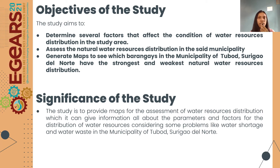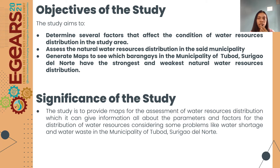Second is to assess the natural water sources distribution, and lastly is to generate maps to see which barangay in the municipality of Tubud, Surigao del Norte has the strongest and weakest natural resources distribution. The significance of the study is to improve maps of the assessment of water sources distribution, which can give information about the parameters and factors for the distribution of water sources, considering problems like water shortage and water waste.